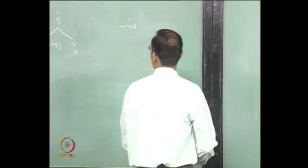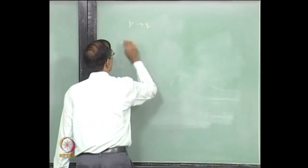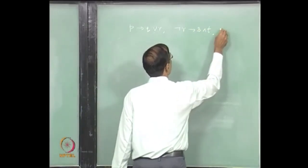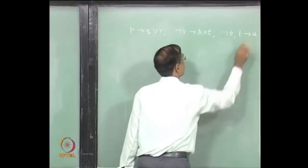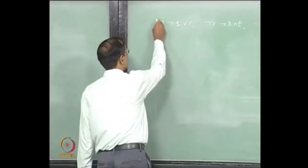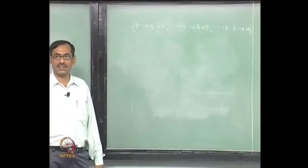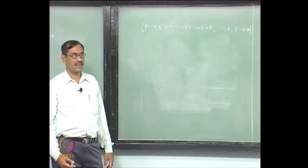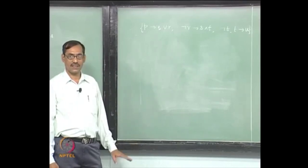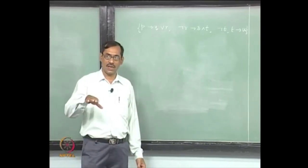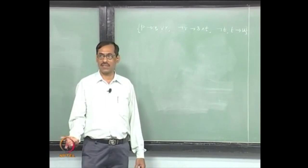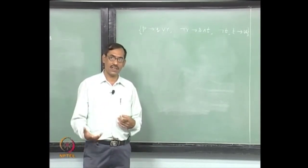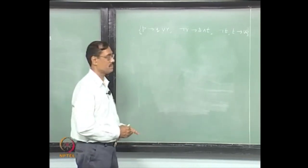Let us see one more example — how to decide this? Say Q or R. We will start with this set; we do not know whether this is consistent or inconsistent. If you guess that it is inconsistent, then you just go for one construction of the tabula. If you are not able to guess, you will go for the completed tabula, where on every path a rule should have been applied on the compound propositions. Then it is a completed tabula. Let us start the tabula.